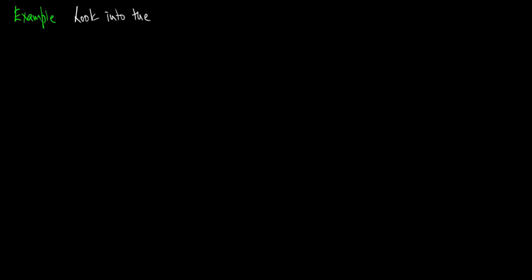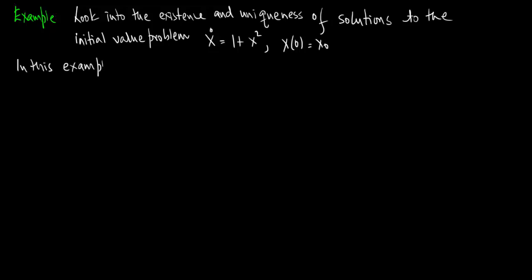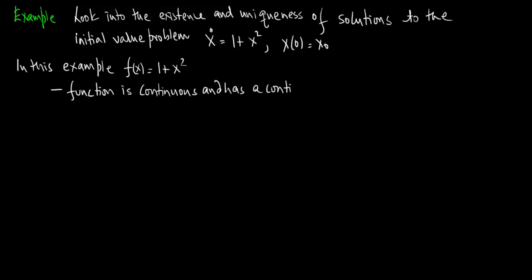Now let us consider an example. Let us look into the existence and the uniqueness of solutions to the initial value problem x dot is equal to 1 plus x squared, where x of 0 is x naught. In this example, f of x is 1 plus x squared, so the function is continuous and has a continuous derivative for all x.